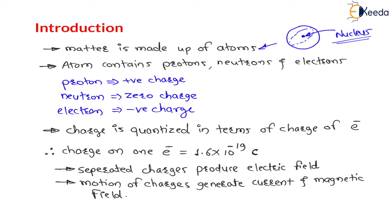On one electron — this term you must remember, this is also from your 12th standard physics — the charge on one electron is 1.6 × 10⁻¹⁹ coulombs. This you must remember. Any charge is specified in terms of charge on electrons, also called Q. The charge is always Q, 2Q, 3Q, 4Q, 5Q, and so on. One Q is 1.6 × 10⁻¹⁹ coulombs.